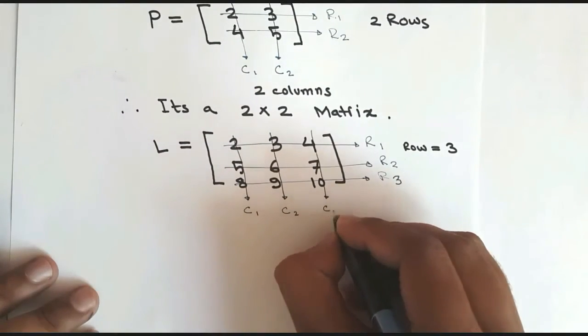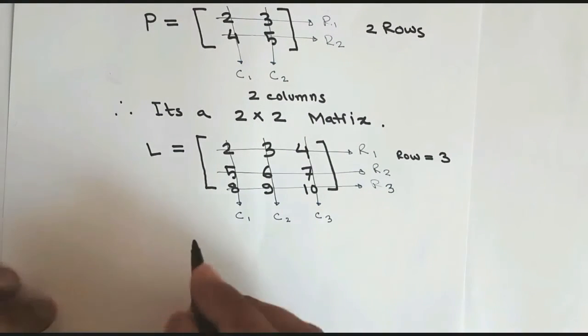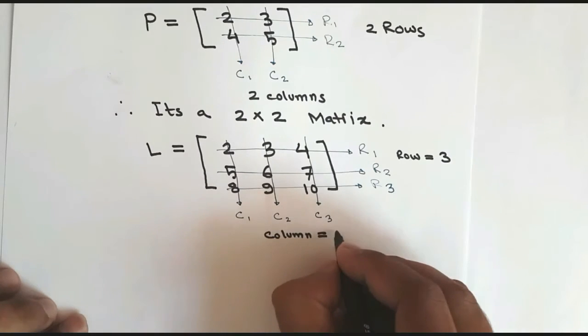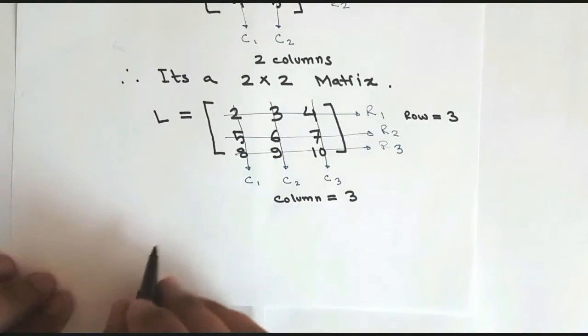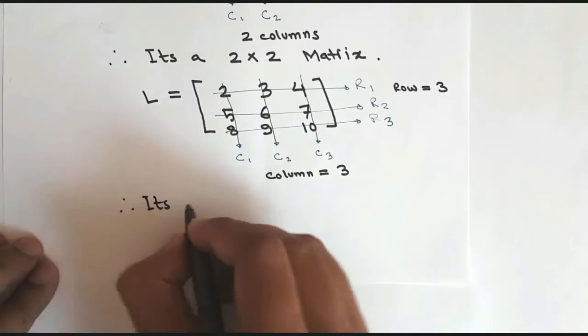And we have three columns, three vertical lines C1, C2, and C3. So columns we have three, so it's a three by three matrix.